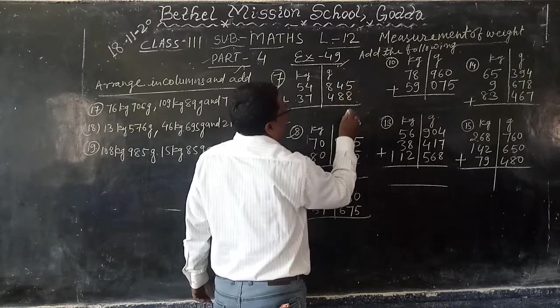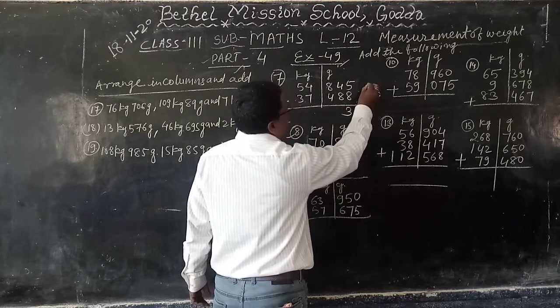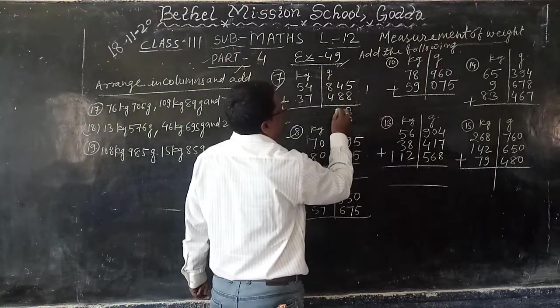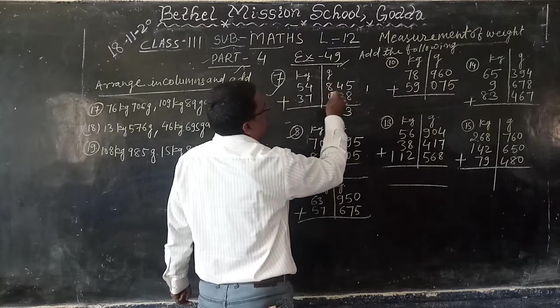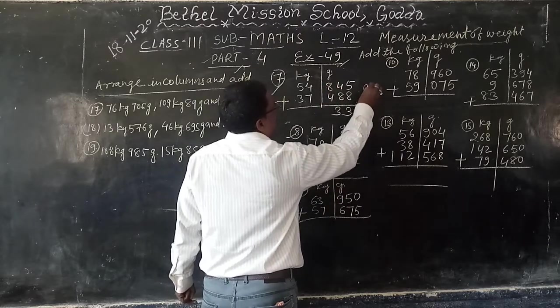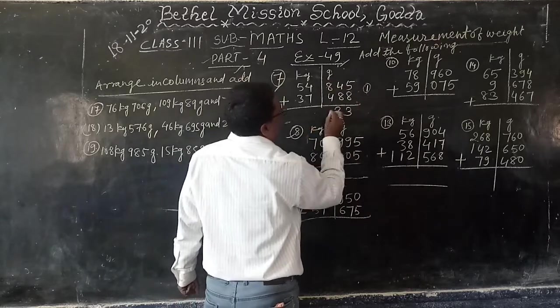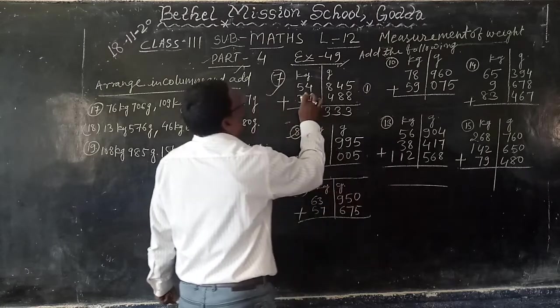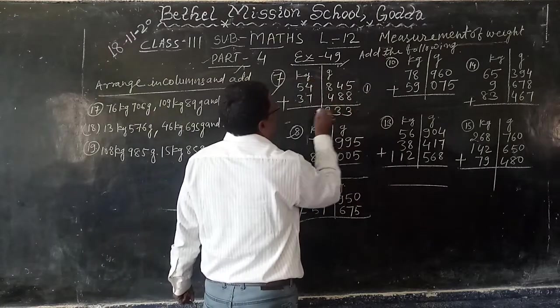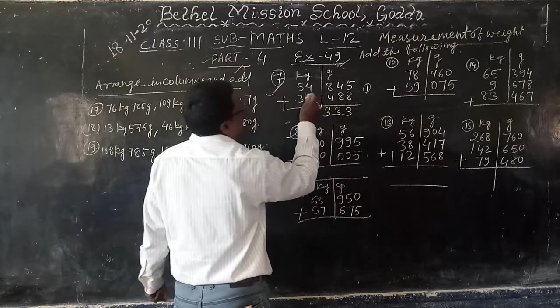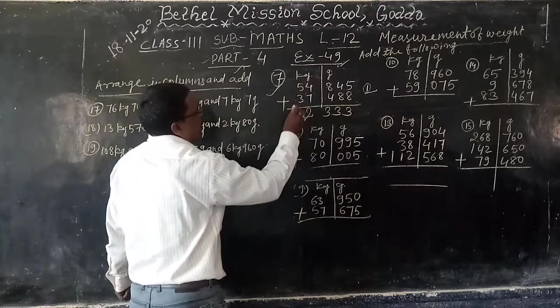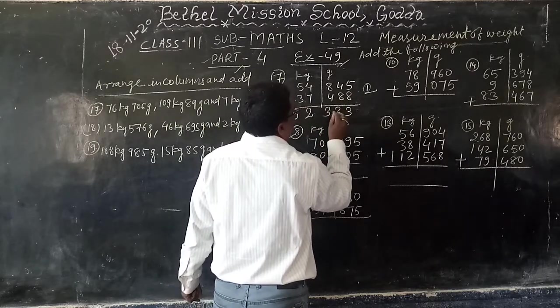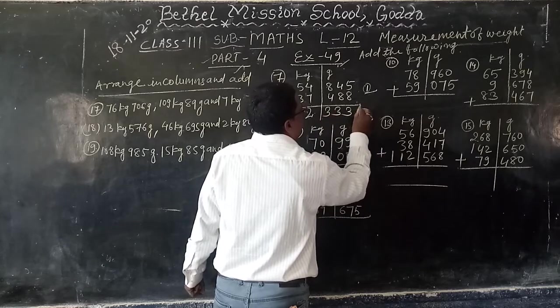8 plus 5, 13. 3 right, 1 in hand. 8 plus 4, 12, plus 1 carry, 13. 3 right again, 1 in hand. 8 plus 4, 12, plus 1 carry, 13. 4 plus 7, 11, plus 1 carry, 12. Again 1. 5 plus 3, 8, plus 1 carry, 9. 92 kg, 333 gram. Answer.